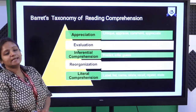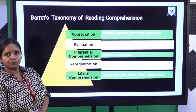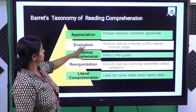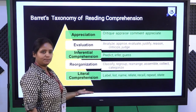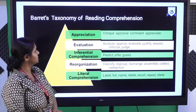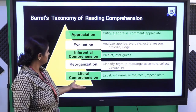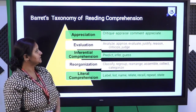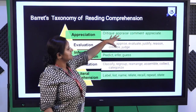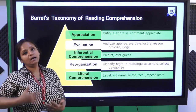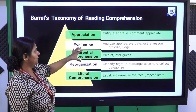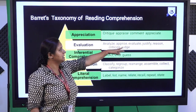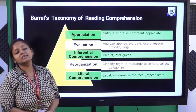Now, Barrett's taxonomy of reading comprehension. According to Barrett's taxonomy, reading comprehension has different purposes: appreciation, evaluation, inferential comprehension, reorganization, and literal comprehension. In appreciation, the purpose is to criticize, appraise, comment, or appreciate — that is the appreciation purpose of a passage. In evaluation, the types can be analyzing, appraising, evaluating, justifying, reasoning, criticizing, and judging.